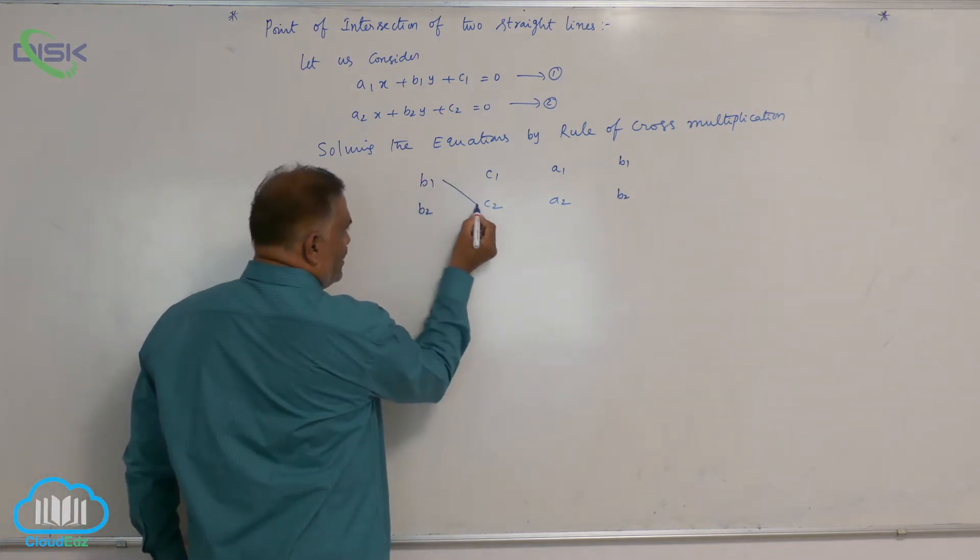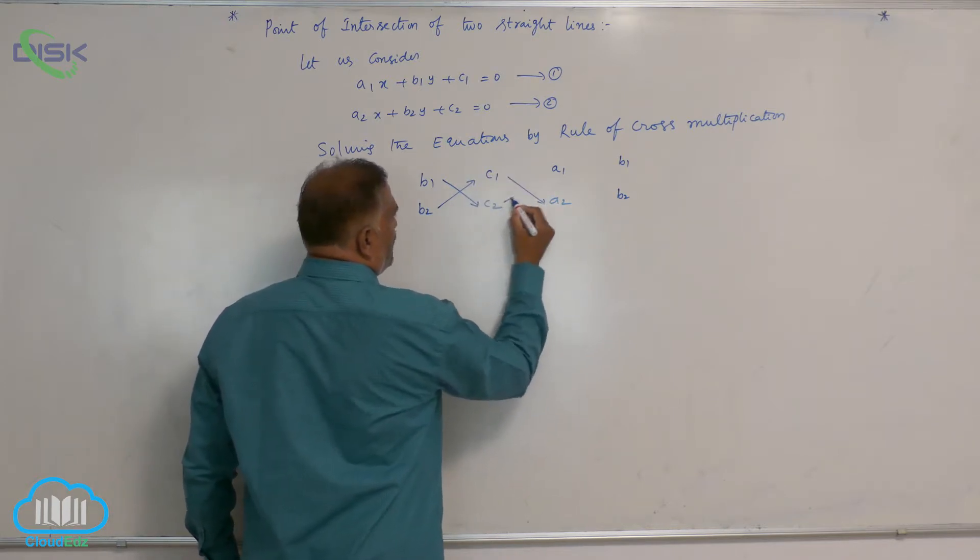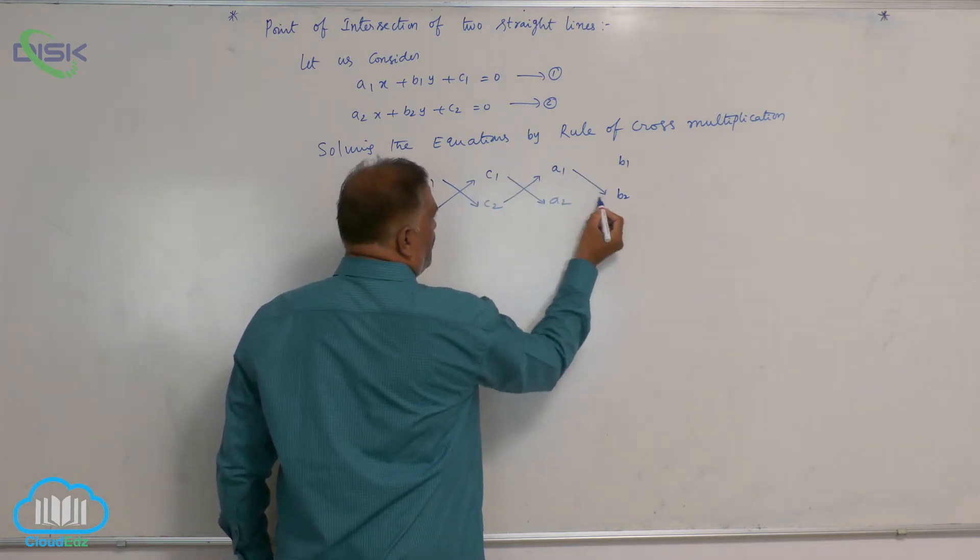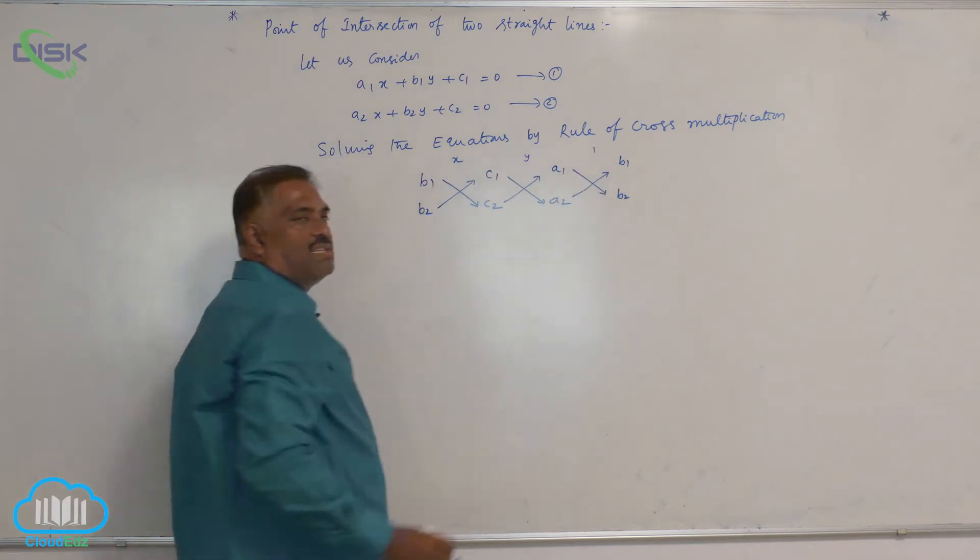It is down minus up, down minus up, down minus up. This is for x, this is for y, and this is for 1.